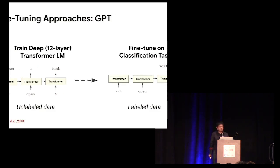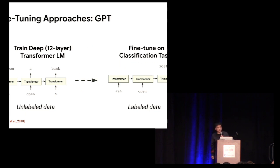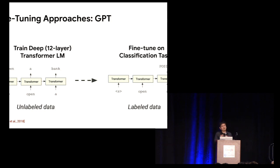The other approach we call the fine-tuning approach, and we use GPT as our example. In GPT, they train a deep 12-layer transformer model from left to right on unlabeled data, and for the downstream task, they simply reuse the language model as their final model by taking the representation of the last token, feeding it into an output layer to get the labels.